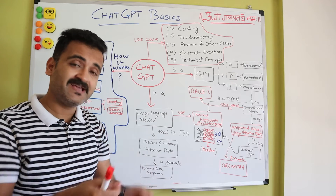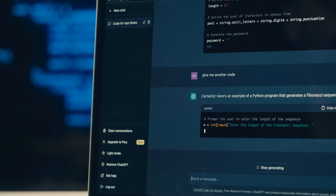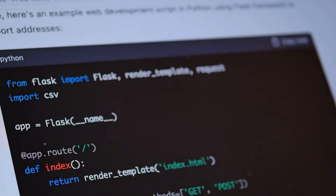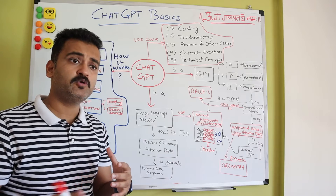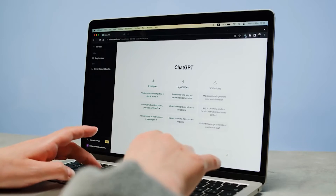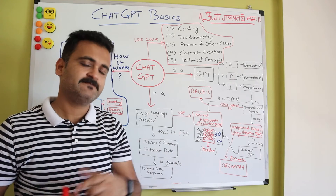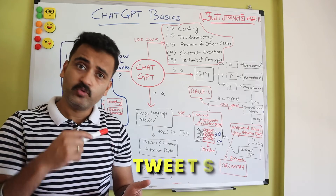People with no coding background can now put in exact requirements and ChatGPT can generate Python or Java code for them, and also explain the logic behind what it has done. Second, for technical troubleshooting, you can put a problem or error description into ChatGPT and ask it to troubleshoot, then follow those steps in your environment. ChatGPT won't access your environment directly but gives a lot of context and insights. Third, for job search, it's very helpful — you can write your resume and cover letter, or feed in a job application and have ChatGPT suggest what to add to your resume or cover letter.